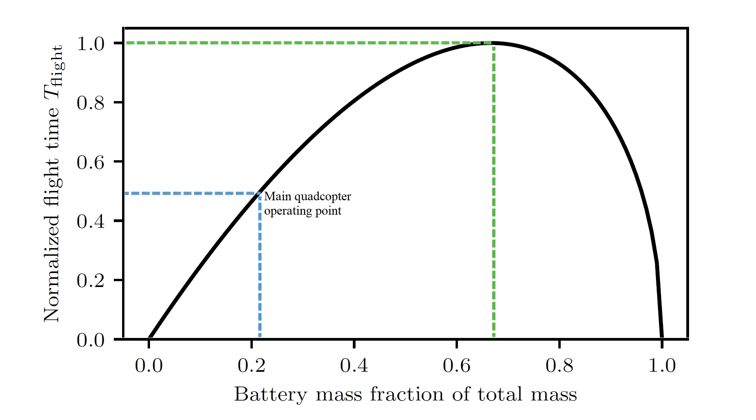Our main quadcopter operates at this point and the corresponding flight time is 12 minutes. Its mass is 0.82 kilograms. Using this plot, the maximum achievable flight time for the main quadcopter is 26 minutes. At that point however, the mass would increase to 1.89 kilograms, which makes it much heavier and less safe.